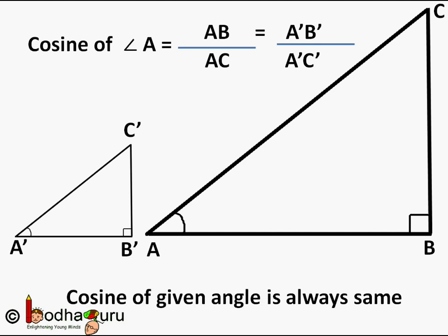Here you see two triangles. A smaller one A'B'C' on the left side and a bigger one ABC on the right side. But the angle A is same in both these triangles.